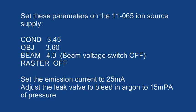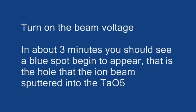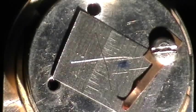In this case, we're going to set the condenser to 3.45 so that we can get more current out of the ion source. We'll turn the beam voltage on and after about three minutes or so, you'll see a blue spot begin to appear. That's as we're burning through the oxide layer on the tantalum.